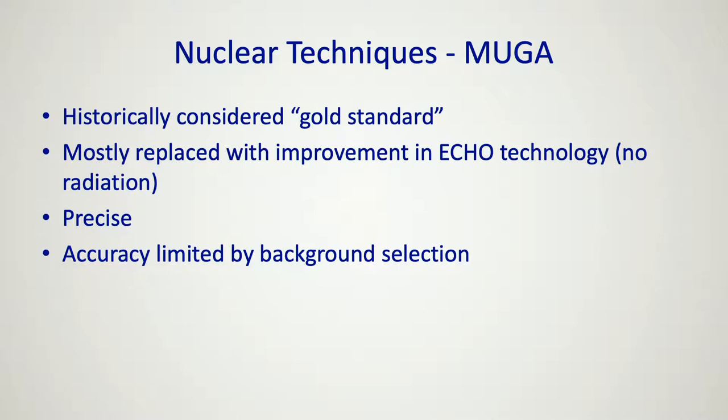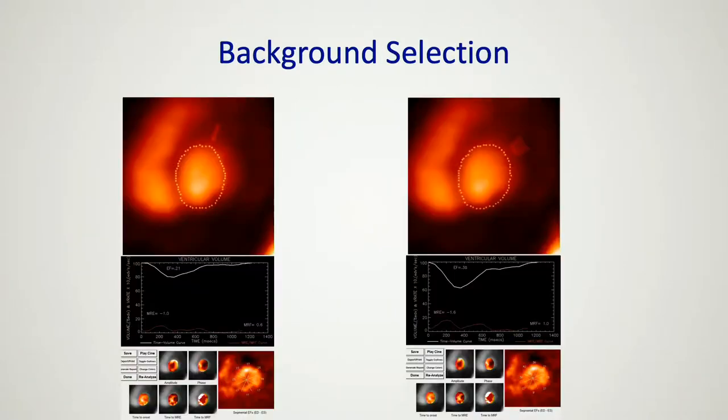What is marked as the hallmark of MUGA is its precision. We can all do the same exact test the same exact way and get the same exact number. But accuracy is the problem. This is a study that I processed. Same study. The same region of myocardium is selected. The biggest difference is the background selection, as you'll notice here.